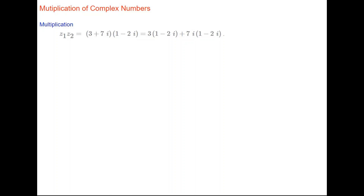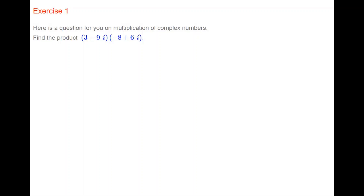Multiplying two complex numbers together is just like multiplying two brackets in ordinary algebra. For (3 plus 7i) times (1 minus 2i), we break up the first bracket: 3 times (1 minus 2i) plus 7i times (1 minus 2i). Expanding: 3 minus 6i plus 7i minus 14i squared. Since i squared equals minus 1, we replace it to get 3 minus 6i plus 7i plus 14. Adding real parts and imaginary parts gives 17 plus i.